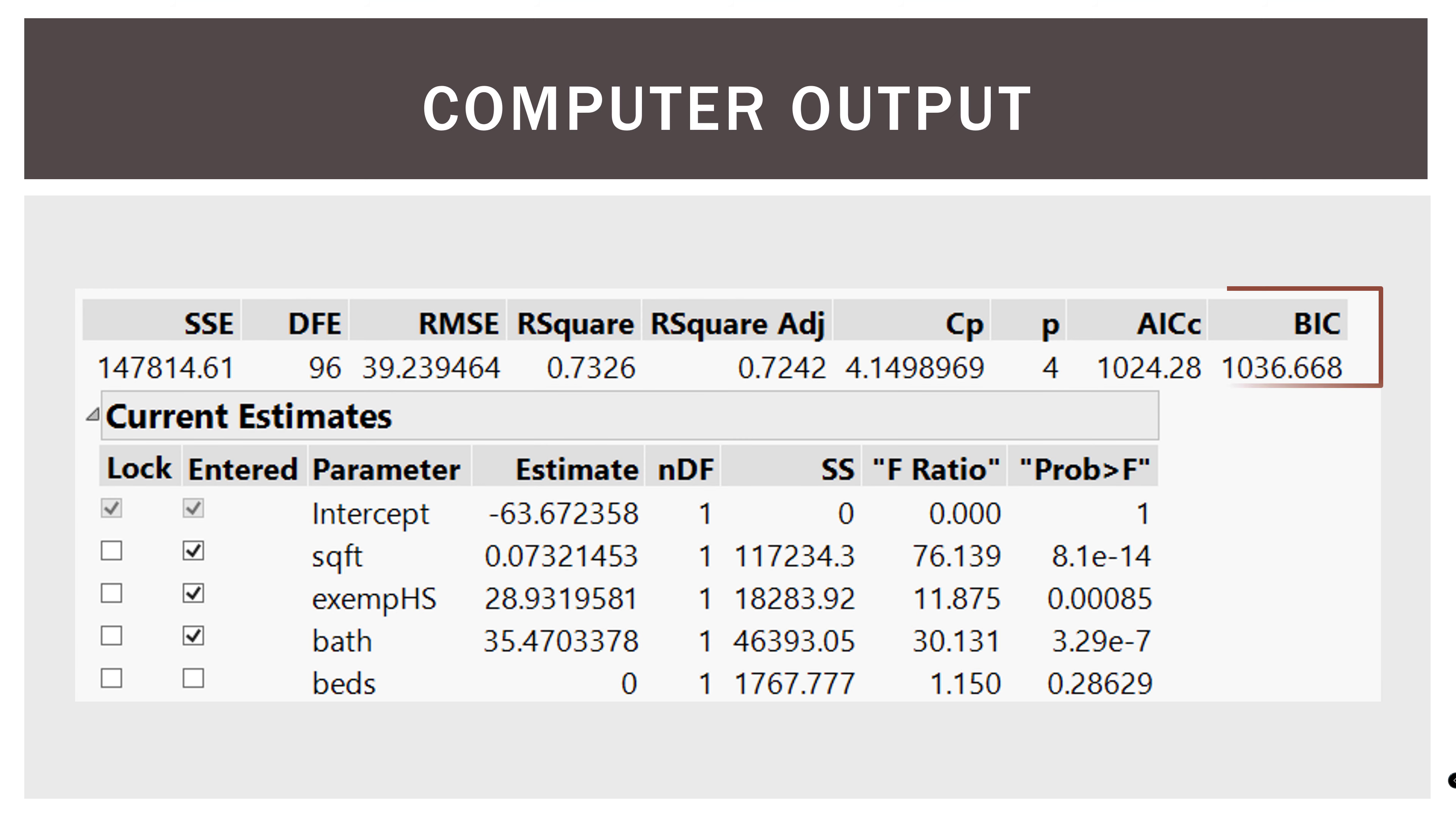Computer output. Here's the output we're going to use. We're going to try to replicate. This is from the example we've been doing in this playlist. So we are modeling house price data using four variables: the square footage of the home, whether or not it is an exemplary high school district (that's a binary variable, zero, one), number of bathrooms in the home, and the number of bedrooms in the home. And we found out that this three variable model was the best. So here we have the SSE, which we will need. And then we have the AICC and the BIC over on the right that we're going to try to replicate by hand.